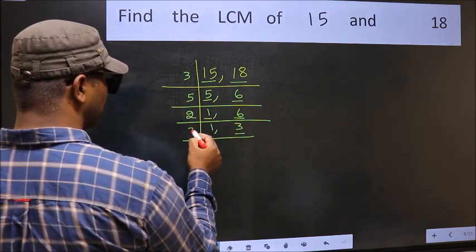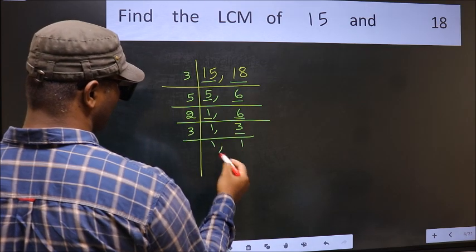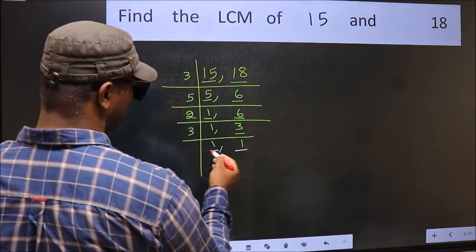Now we have 3. 3 is a prime number. So 3, 1 is 3. So we got 1 in both places.